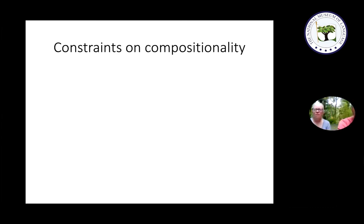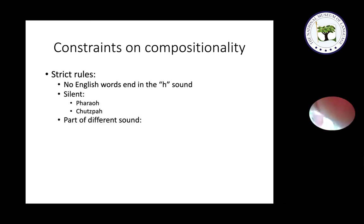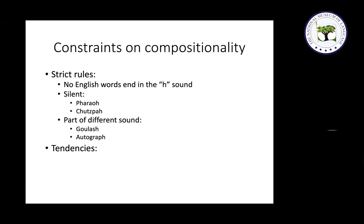There are plenty of linguistic examples of similar constraints on composing linguistic units together. We saw one earlier with the prefix 're-,' which can only apply to certain verbs — you can say 'reopened' or 'reappeared' but not 're-sneezed' or 're-laughed.' Since we're now discussing the crossword grid, the important types of units to think about are how letters get combined together to form words, since in the crossword grid the basic units are letters.